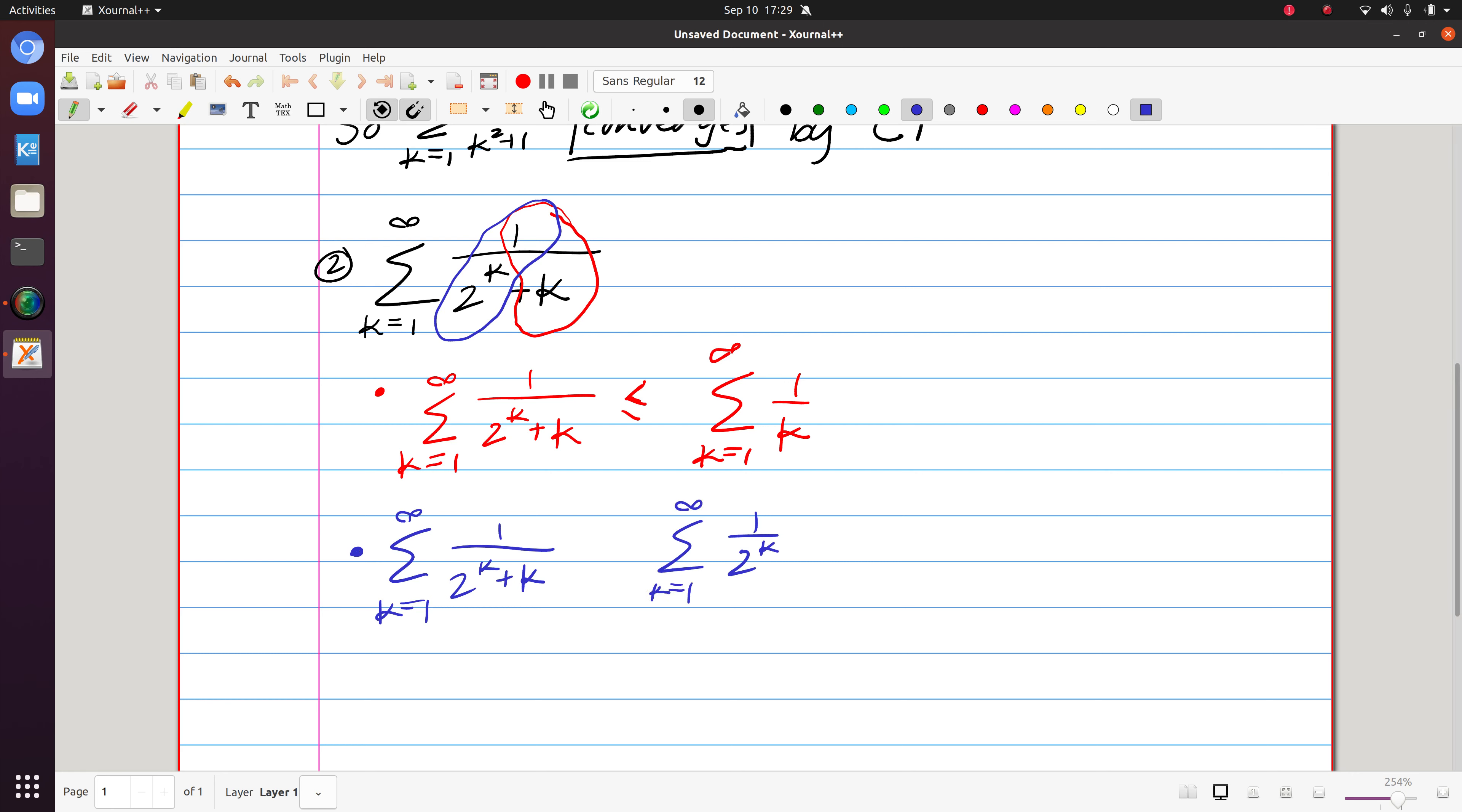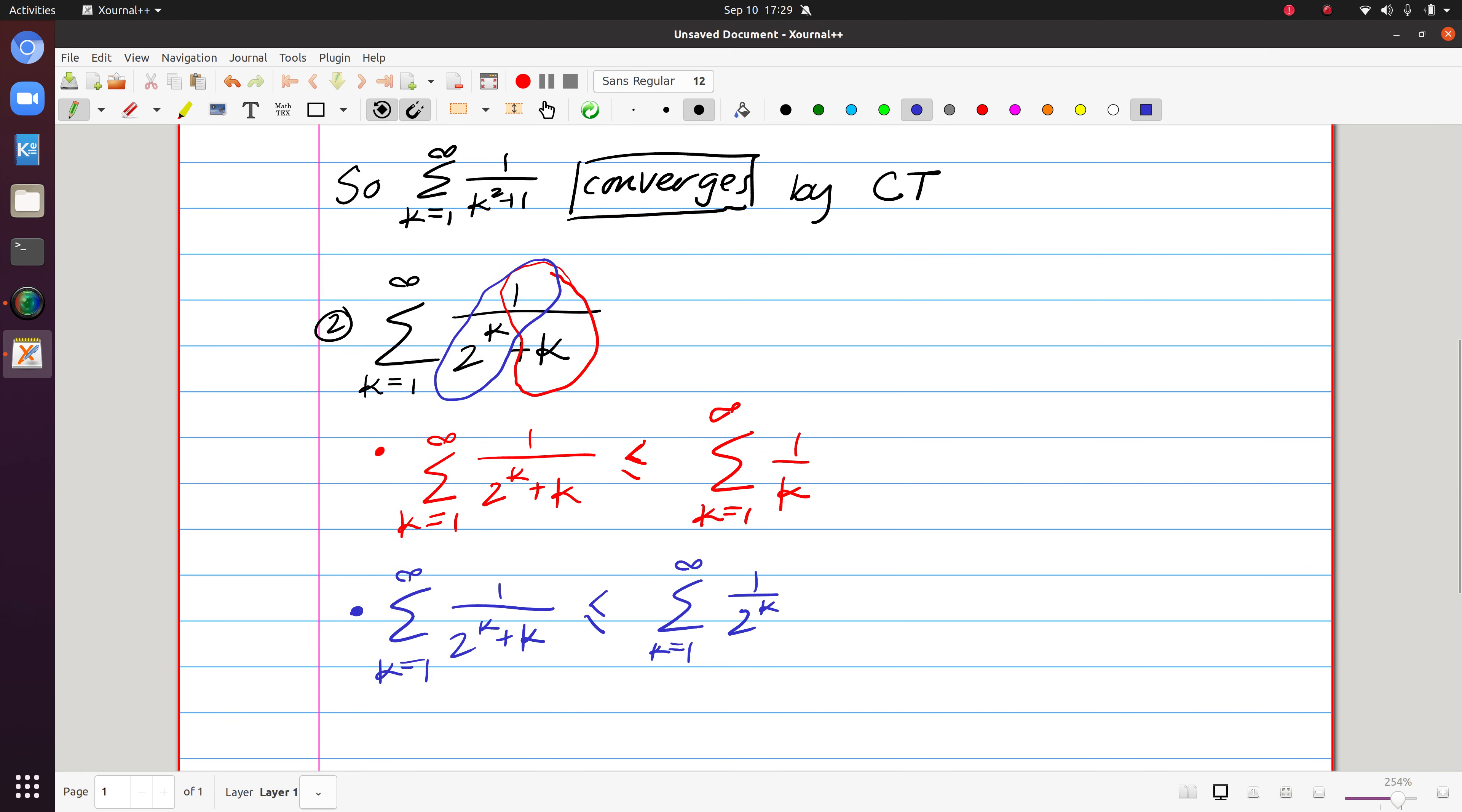Same thing happens. The denominator on the left is larger. So this also provides now an upper bound on the original series. So we have two potential series to compare this to.